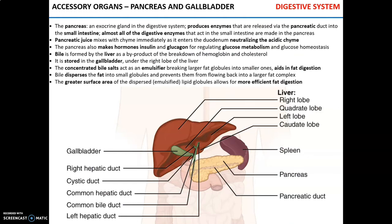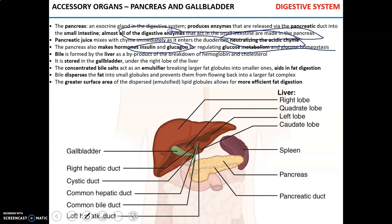The pancreas is one of the essential accessory digestive organs. It is both an exocrine and endocrine gland. As an exocrine organ it produces pancreatic juice; as an endocrine organ it produces hormones insulin and glucagon, which regulate glucose levels and glucose homeostasis. Pancreatic juice contains bicarbonate, which neutralizes the acidic chyme, and practically all the digestive enzymes that act in the small intestine — from trypsin and chymotrypsin to pancreatic amylase and carboxypeptidase.